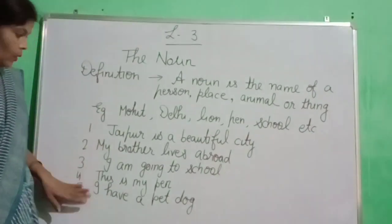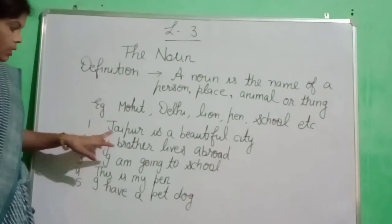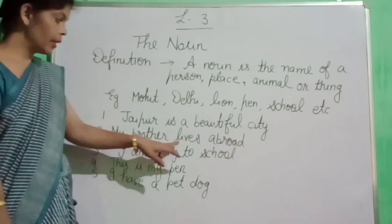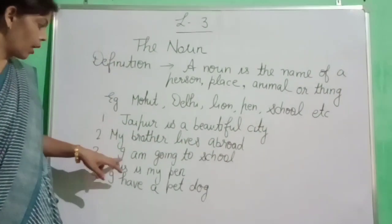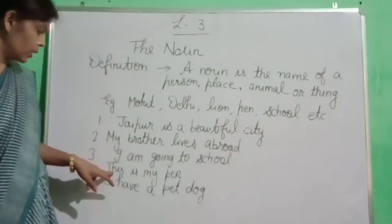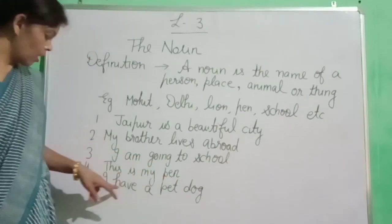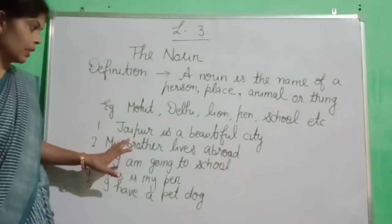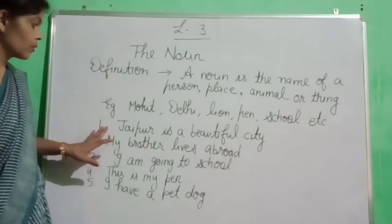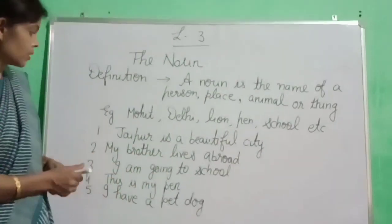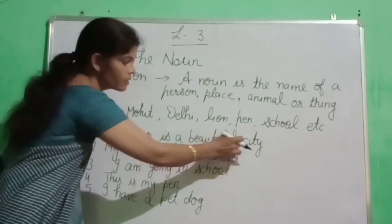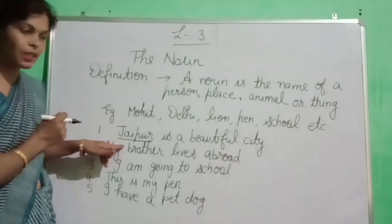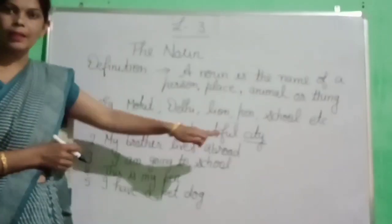Dear students, look here. I have written some examples here. First is: Jaipur is a beautiful city. My brother lives abroad. I am going to school. This is my pen. I have a pet dog. Can you tell me, in the first sentence, what is the noun? Jaipur — Jaipur is the name of a place. City — city bhi kya aapne? Place.